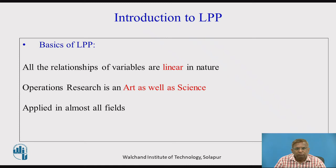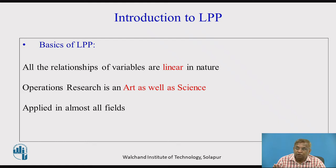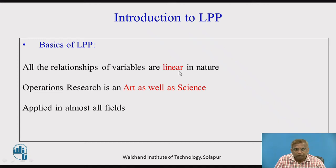As we have discussed, all the variables that we define in the problem are used in formulating the objective function as well as the constraints. Some mathematical relationship between these variables and the resources, if we establish that — all these mathematical relationships of the variables considering these different resources — these mathematical relationships are linear in nature. Their degree of polynomial is 1, and hence, looking at this particular linear relationship of these variables, it is referred to as linear programming problems.